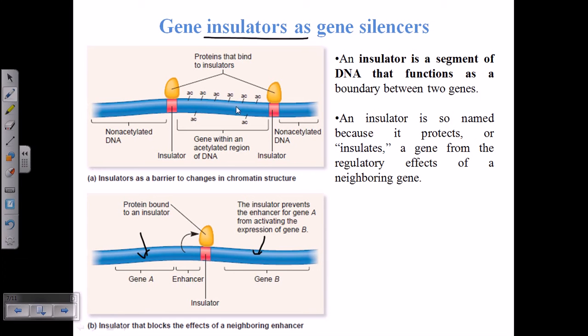An insulator is so named because it protects or insulates a gene from the regulatory effects of the neighboring gene.